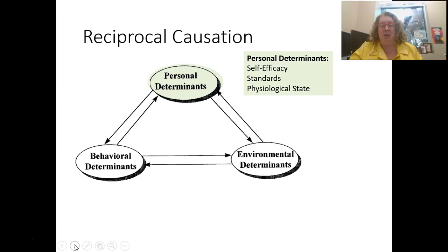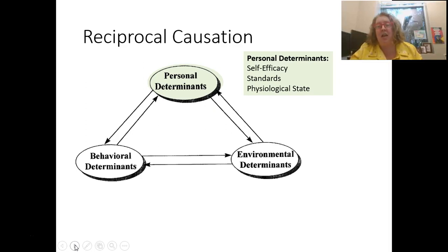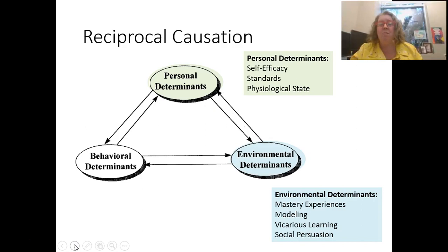In the reciprocal causation model, our personal determinants include self-efficacy — do I believe I can complete this task? Standards — how do I measure success? Is it an A, a C, finishing a marathon? And physiological state — am I anxious, nervous, do I have adrenaline, am I in a fight-or-flight response?